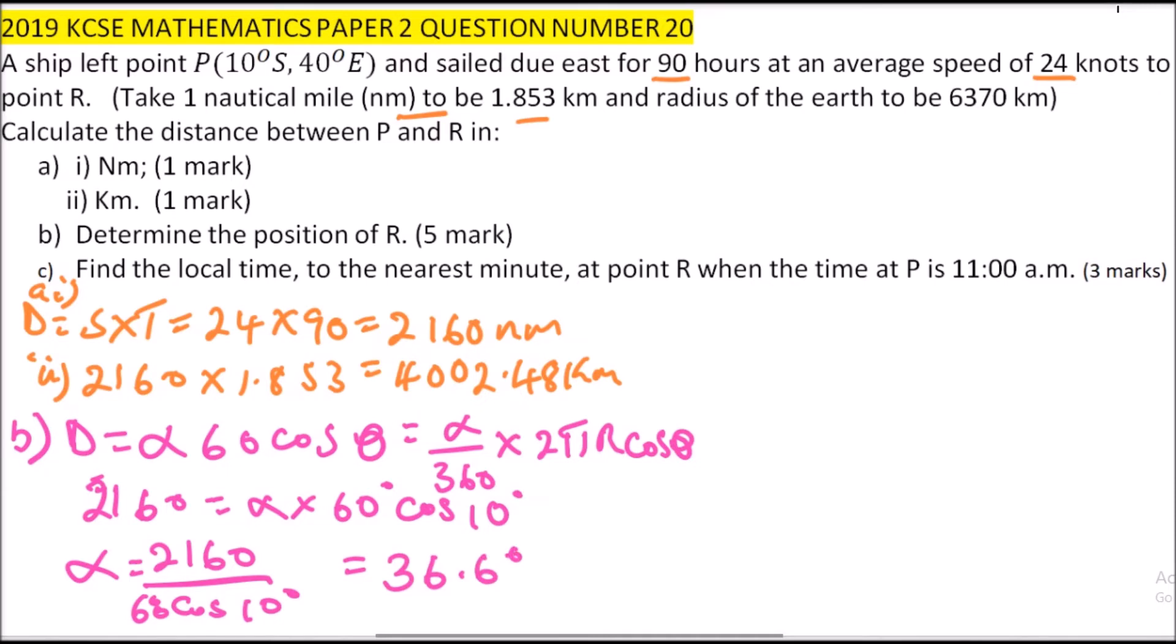Then you get the angle in between, it will be, you get 36.6, you add angle 40, that will give us 76.6 degrees. And therefore, the position of R is 10 degrees to the south, because the latitude does not change, and 76.6 degrees to the south. So that is the position of R.